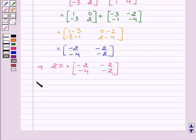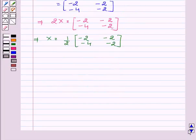This implies X equals [minus 2, minus 2, minus 4, minus 2] divided by 2. This implies X equals [minus 1, minus 1, minus 2, minus 1].